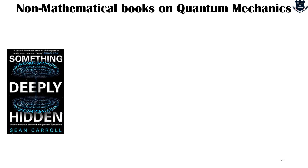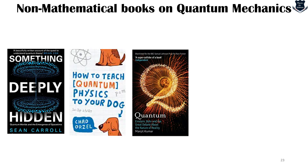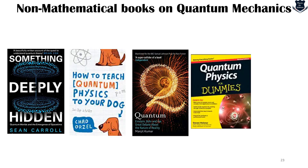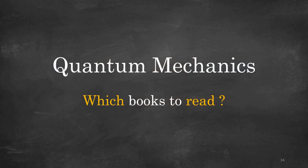Now we come to the non-mathematical books on quantum mechanics — these are light readings. Sean Carroll's 'Something Deeply Hidden' is wonderful. 'How to Teach Quantum Mechanics to Your Dog' is very popular. Manjit Kumar's book on quantum mechanics is a superb, excellent read. 'Quantum Physics for Dummies' is good and contains some mathematics. 'Beyond Uncertainty,' covering Heisenberg and atomic physics, is also great. These five books are enjoyable light reading — the two marked in red are especially highly authoritative and authentic.